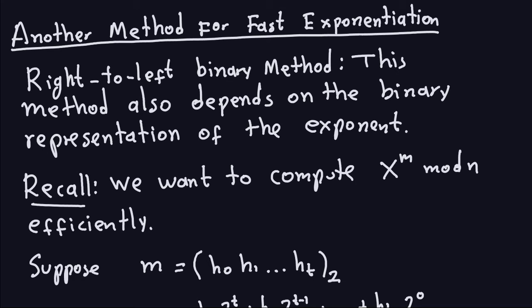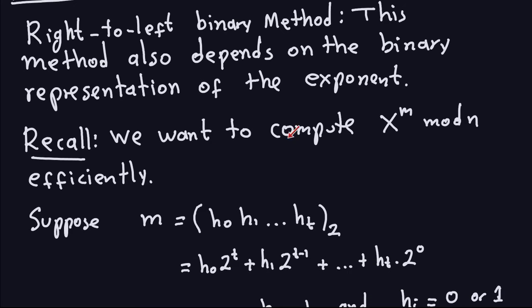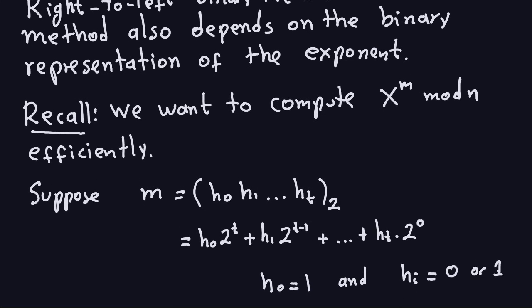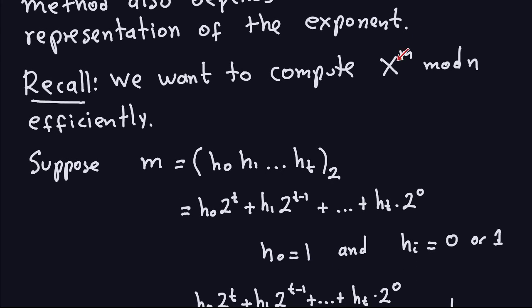This method is also based on the idea that we want to represent the exponent in binary form, and with that binary form we will know how to do the multiplications required to get the answer. So this method also depends on the binary representation of the exponent. What we always want here is to compute x to the n modulo n efficiently, meaning we want to perform as few operations as possible.